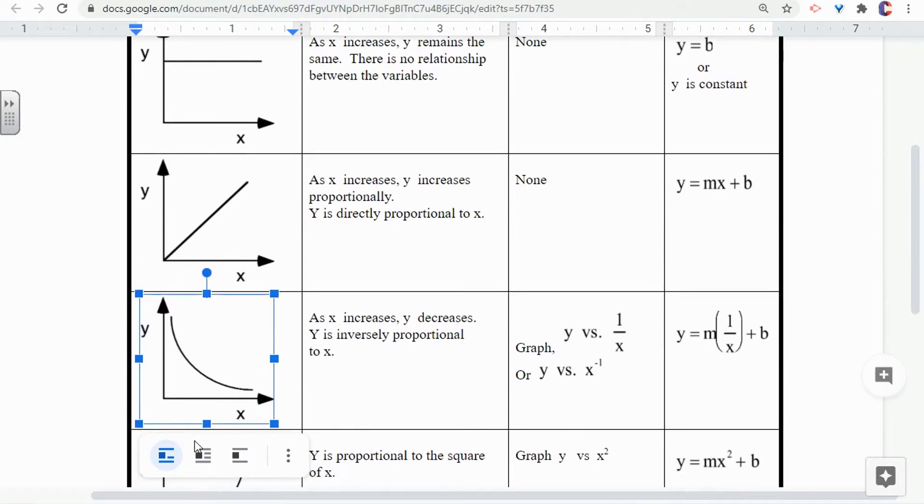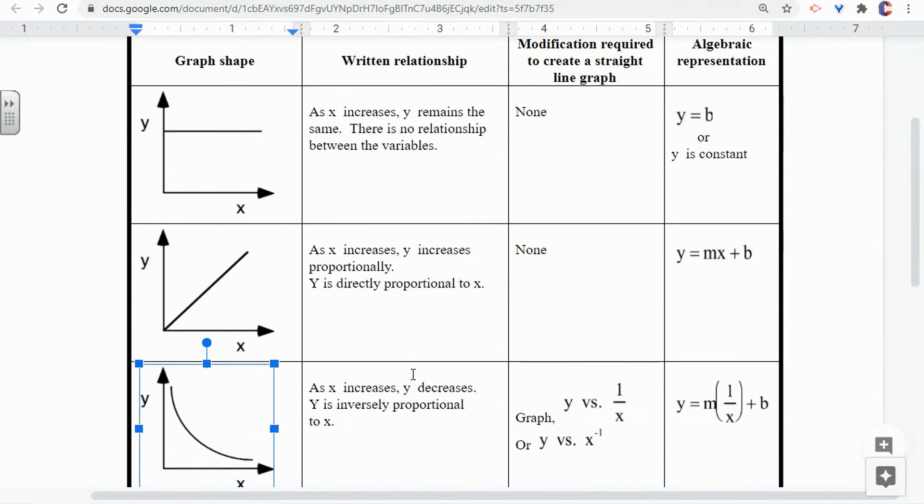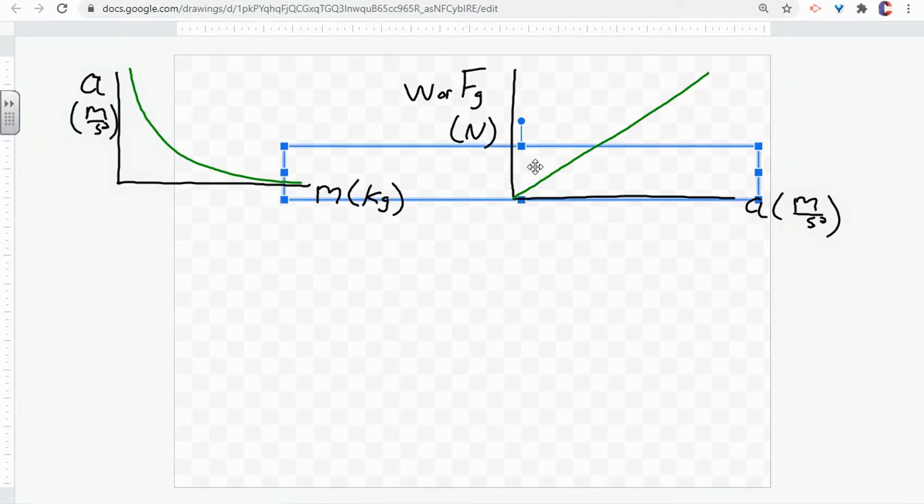We've got a graph that looks like this and a graph that looks like that. So we can see that the graphs that we're using, the written relationship box we have here, we can see that this is the generic statement. And what we want is the proportion statement. So we're going to change X to acceleration and Y to weight,